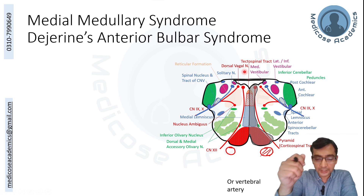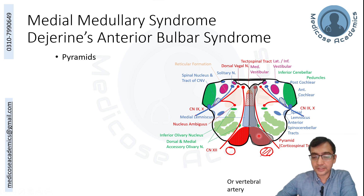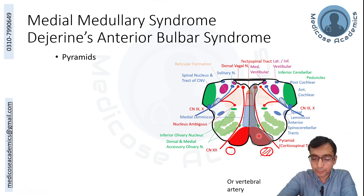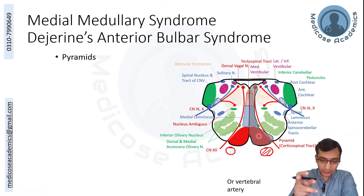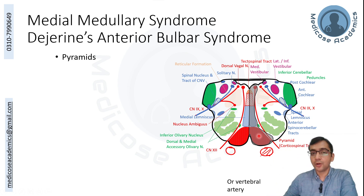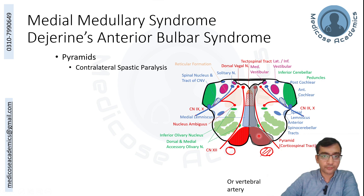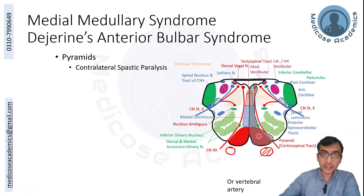The structure affected is the pyramid — the corticospinal tract — which is responsible for all voluntary movements of the body. In this picture, we are above the pyramidal decussation. The tract crosses the midline at the junction of medulla and spinal cord, so the lesion leads to upper motor neuron type paralysis — contralateral spastic hemiplegia — affecting both the upper and lower limb.